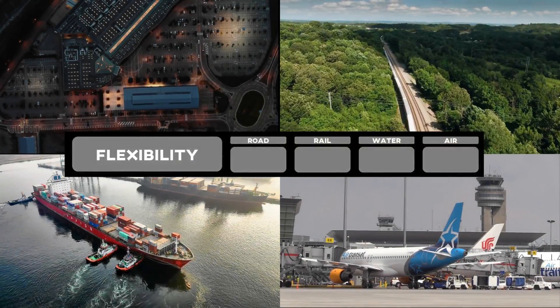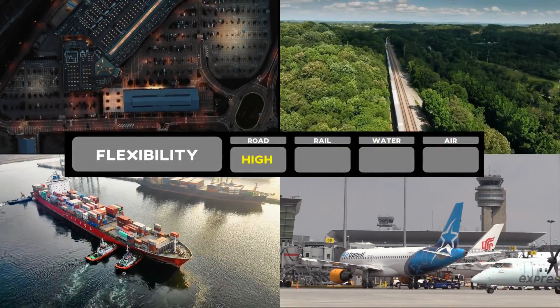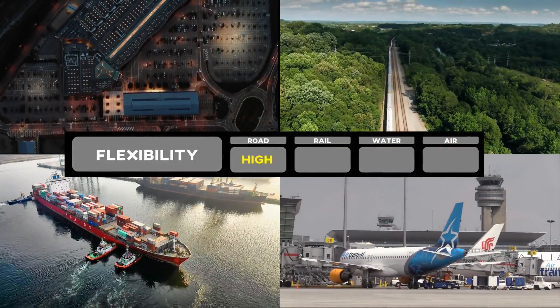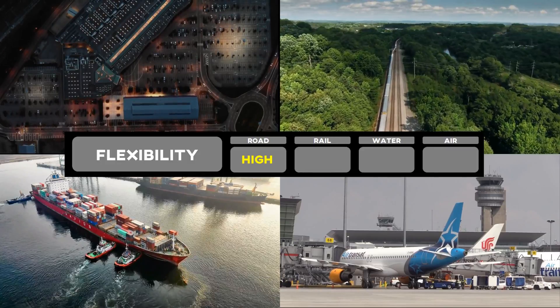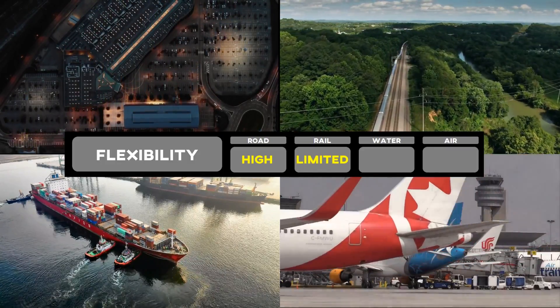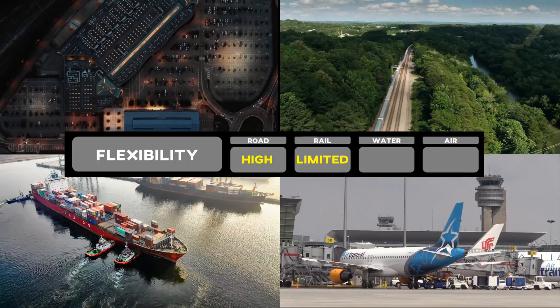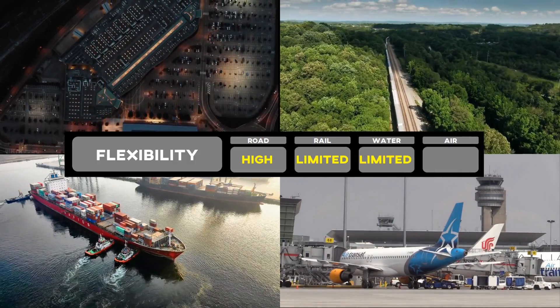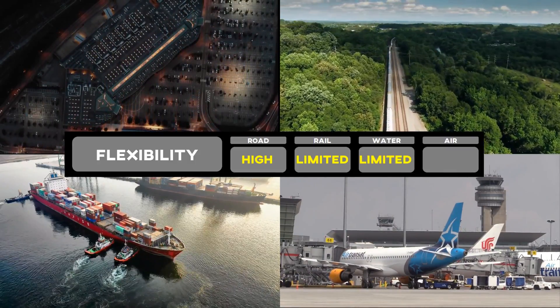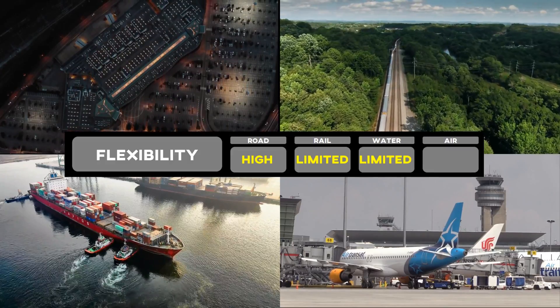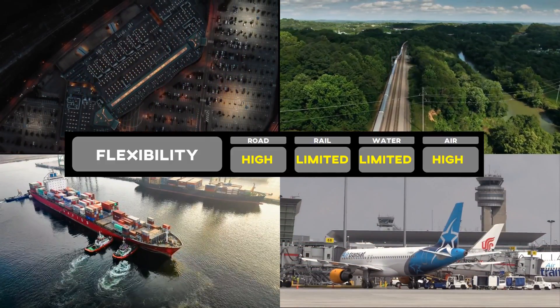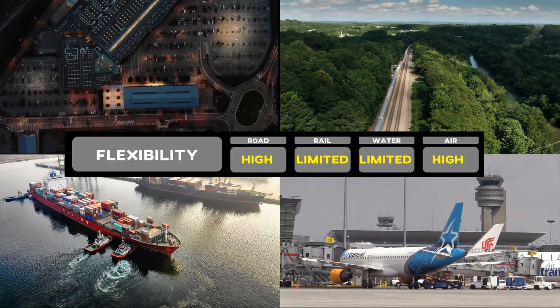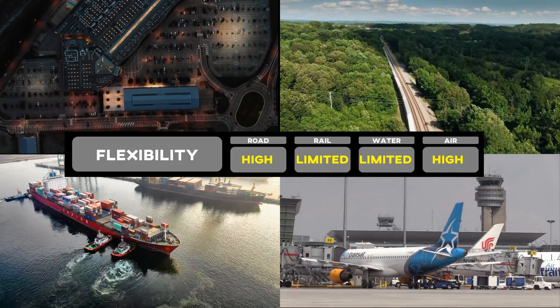Let's talk about flexibility. Road transport is highly flexible — roads allow multiple stops and route changes. Rail transport has limited flexibility due to fixed rail networks. Water transport has limited flexibility especially for ocean routes, but is more flexible on rivers and lakes. Air transport offers high flexibility for long-distance travel, but is limited in terms of landing options and short-distance travel.